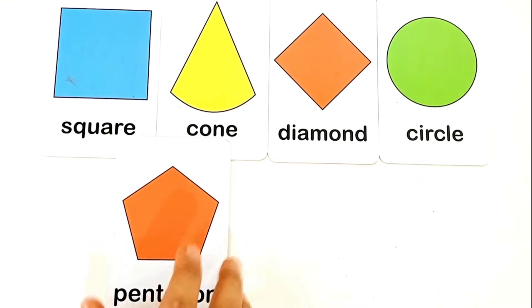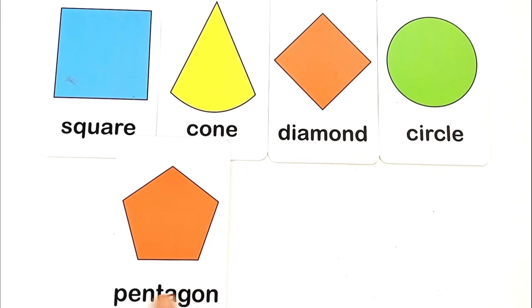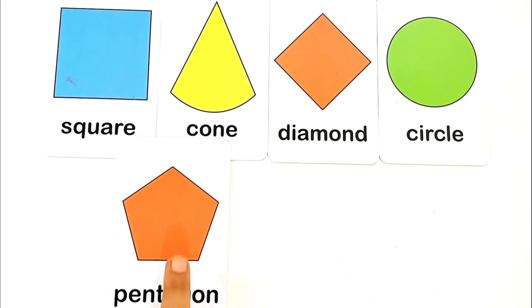P for pentagon. P E N T A G O N, pentagon. This is pentagon shape, and the color is orange color.